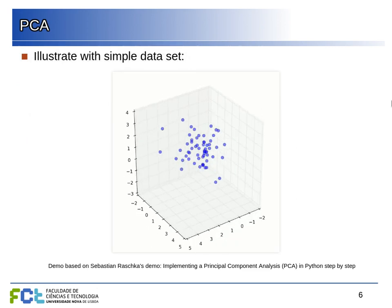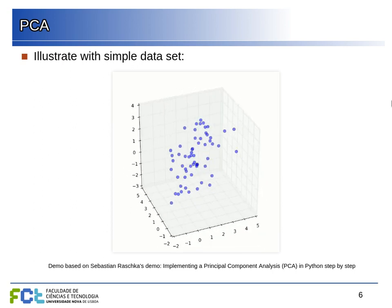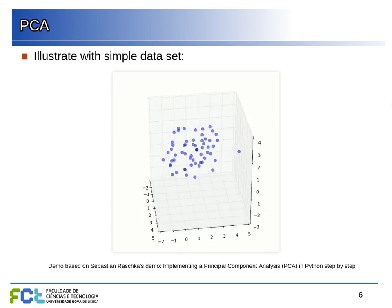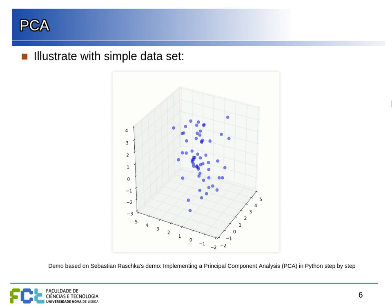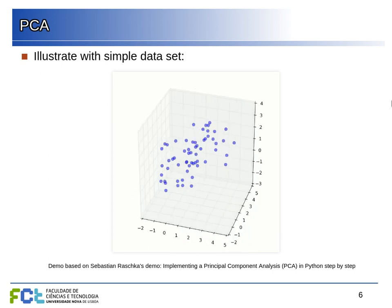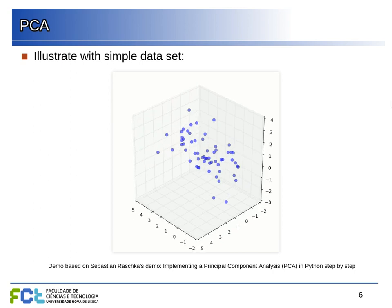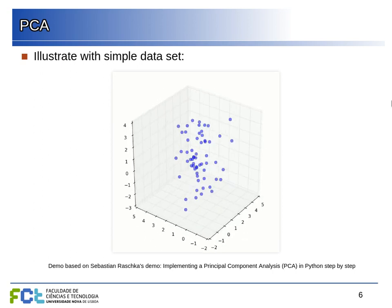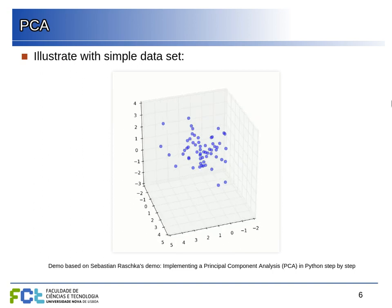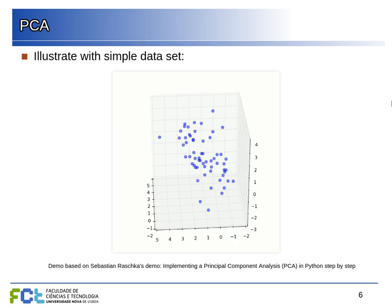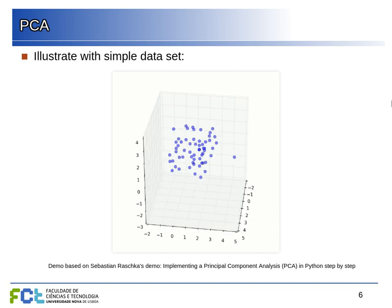Looking at this toy example, we have a simple three-dimensional data set spread out in a diagonal — there is one direction in which the data is more spread out than the others, but this diagonal is not aligned with any of the coordinates. What we want to do is find this diagonal as our first feature — the position along that vector. The second feature would be a position along a perpendicular vector capturing most of the remaining spread, reducing the three-dimensional data to two dimensions while retaining as much spread as possible.